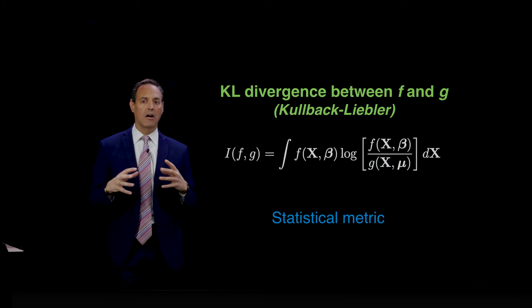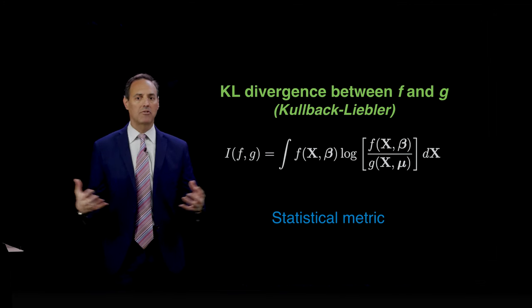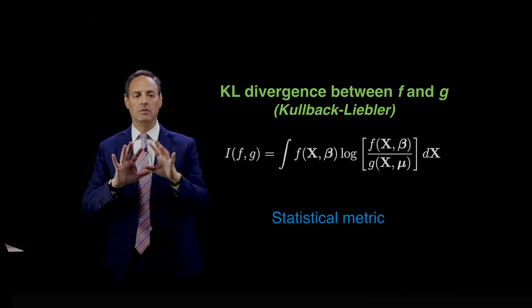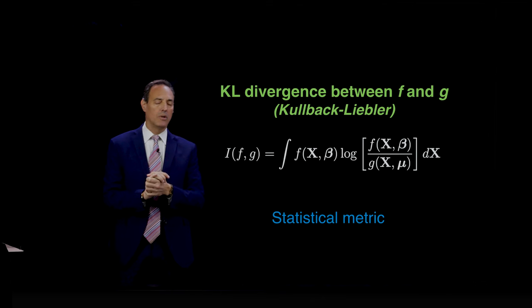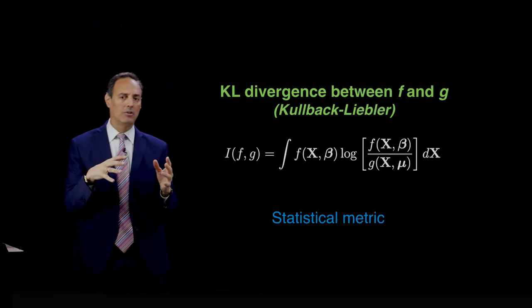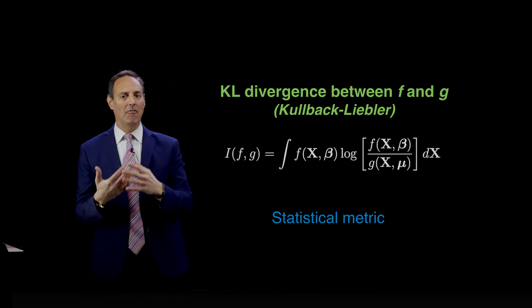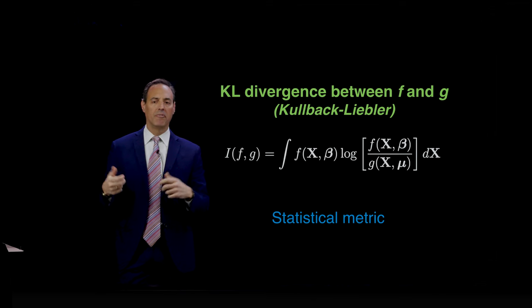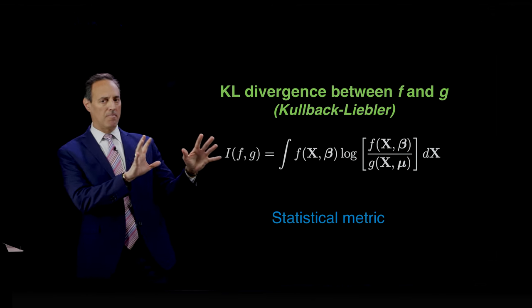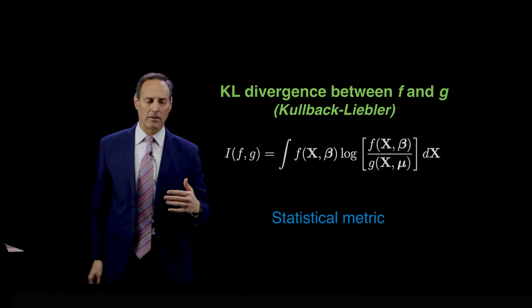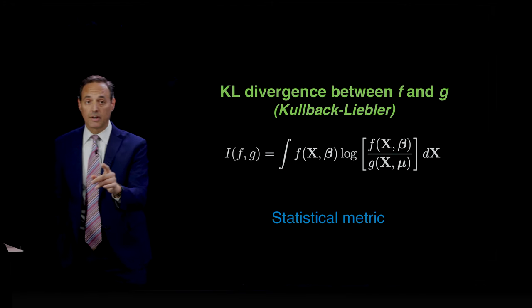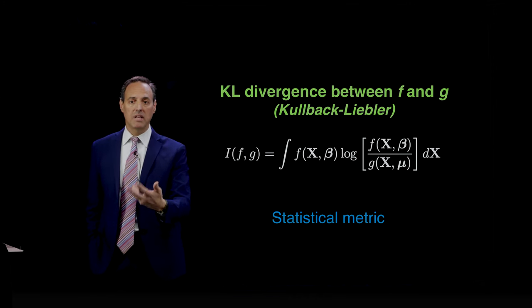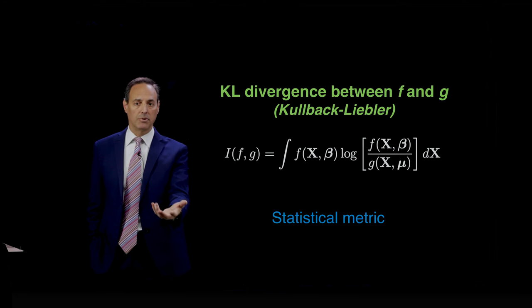The Kullback-Leibler distance or KL divergence is given by this integral: the KL divergence between F and G is just F log F over G dx. It's a statistical metric. You're not looking at a single run of the data. You're looking at many trials so that you have enough information to construct a PDF for both F and G, and that's going to allow you to say statistically how close or how far away they are.